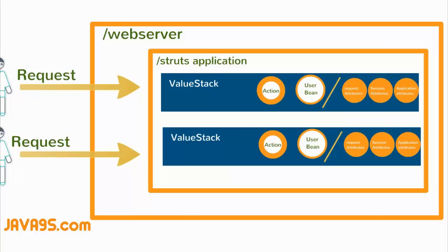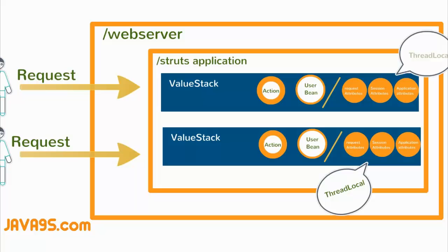Please remember that the value stack is a thread-local object for each request. This means the value stack created for a particular request will not have any interference with the value stack created for a different request — they are local to a particular thread, which is why we call it thread-local.